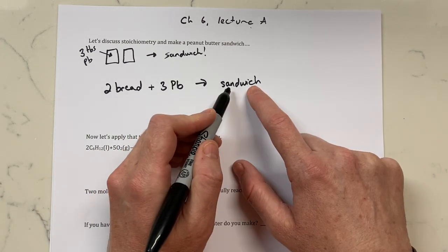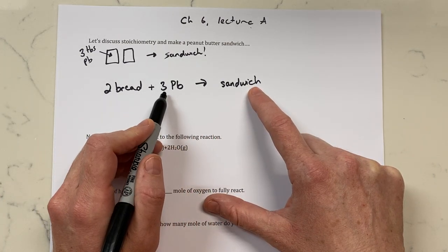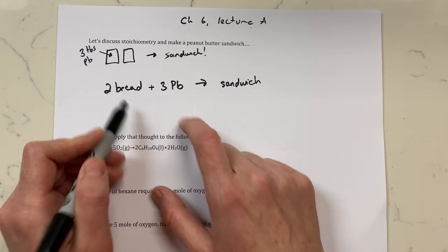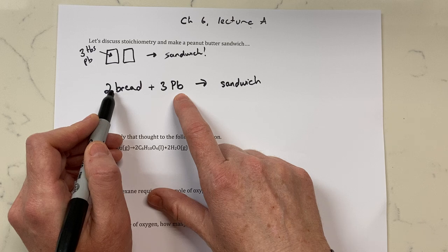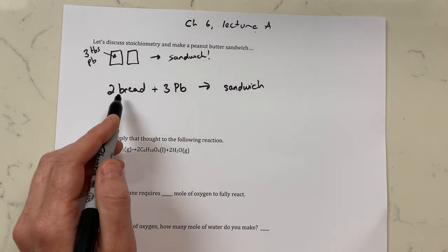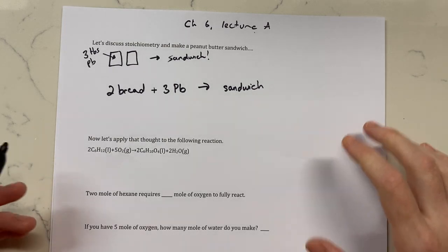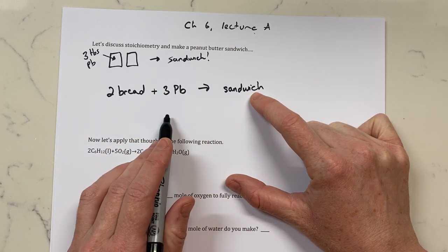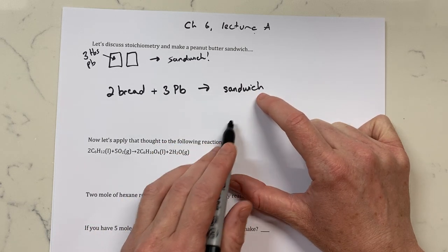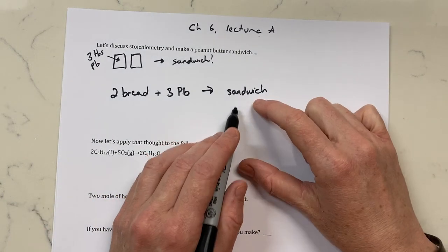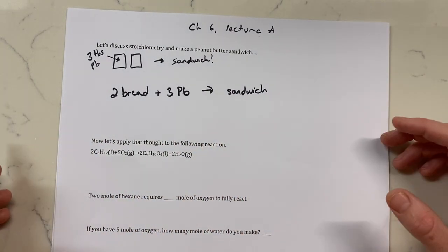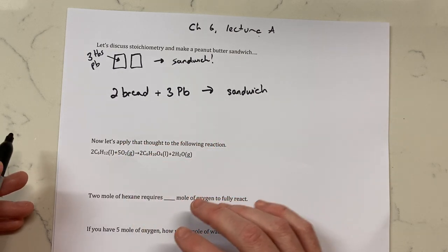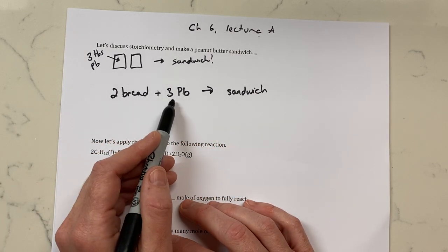Let's go through this a little bit. If I make one sandwich, how many tablespoons of peanut butter do I need? I need three. If I make one sandwich, how many slices of bread do I need? I need two. You can figure out that these ratios are always going to be set. If you want to make half a sandwich, you need one piece of bread and one and a half tablespoons of peanut butter. To make a half sandwich you need half of these amounts. You can make 0.27 of a sandwich — it's always going to be a ratio of two to three to one.